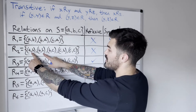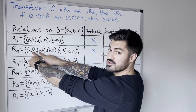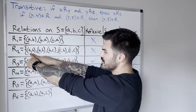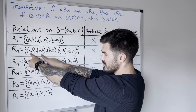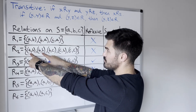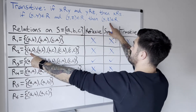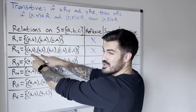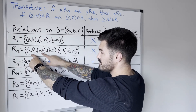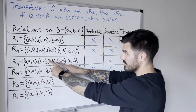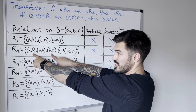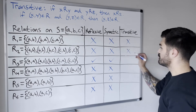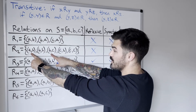For relation two: we have (A,B) and (B,B) — we need (A,B), which we already have. We also have (A,B) and (B,C), so we need (A,C) — but we don't have (A,C). So relation two is not transitive. We can skip ordered pairs where the first and second coordinates are the same, since checking those just sends us back to an existing pair.